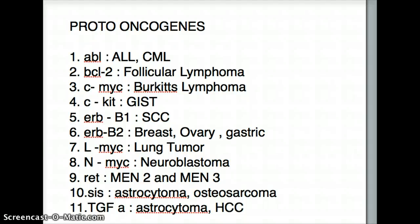Hello friends. Welcome back to another tutorial of USMLE topics. This is a continuation of the tumor suppressor genes — this one is the proto-oncogenes. These 11 examples are one of the most commonly tested proto-oncogenes. So let's talk about proto-oncogenes and tumor suppressor genes one more time.